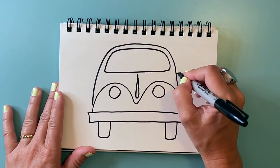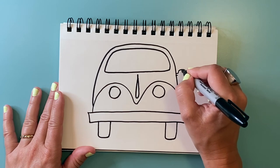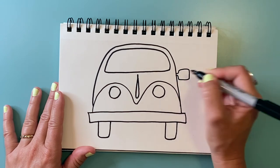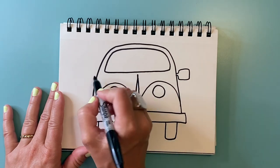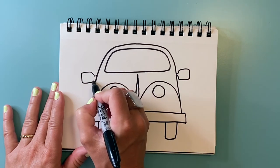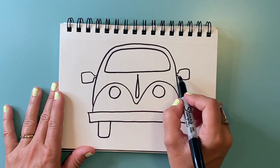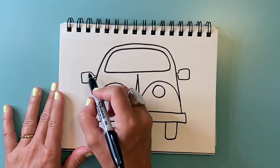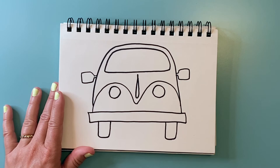We need rearview mirrors off to the side. One on that side. So I'm making a part that kind of sticks out and then kind of a square shape or a rectangle for the rearview mirrors.